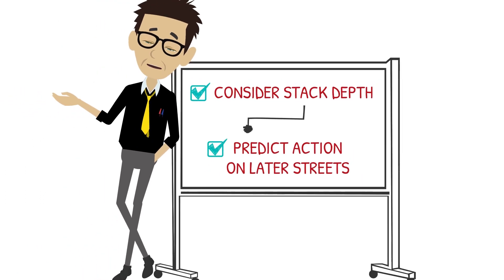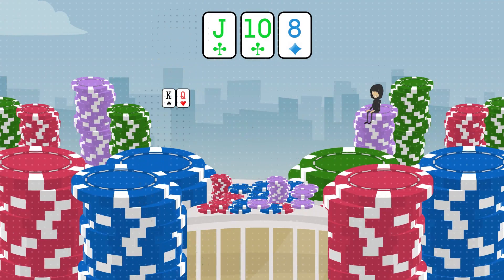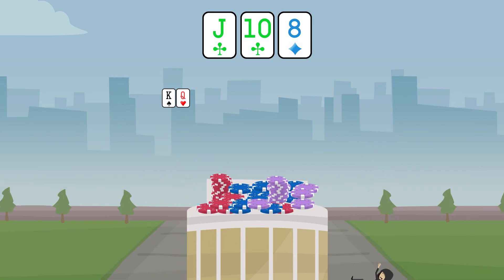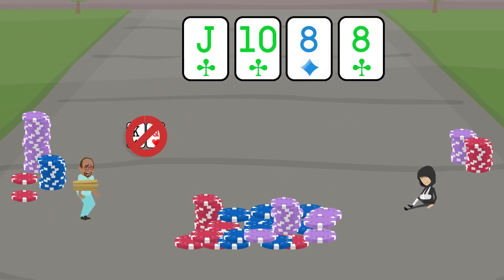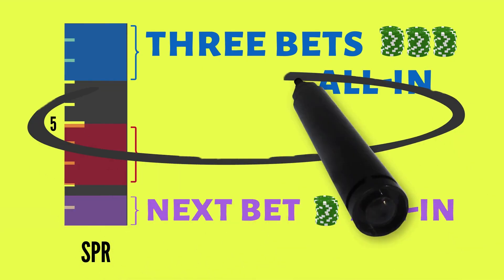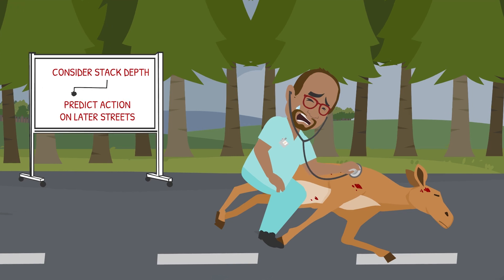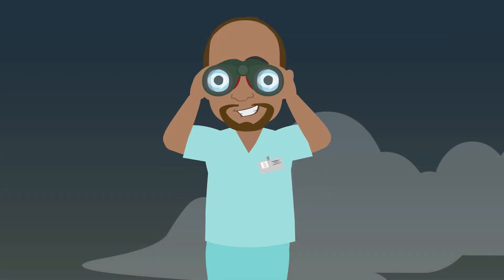Considering stack depth and predicting action on later streets is critical to your decision-making. Some of this will be intuitive: if stacks are super deep, you can peel more liberally with hands on the flop. If stacks are shallow and your opponent will have less than a pot-size bet on the turn, you should not be calling with low equity hands on the flop. Middle zones can be a lot trickier to navigate — your job is to recognize these spots before you're in them and always be looking ahead.